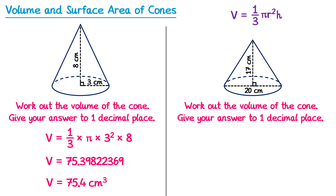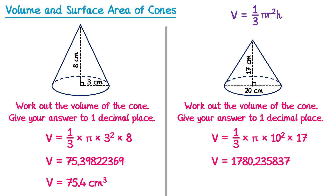For the second cone: volume = 1/3 × π × r squared. The diameter is given as 20, so the radius is half of that — 10. So we multiply by 10 squared, then by h, which is 17. Typing this into the calculator and rounding to 1 decimal place gives 1780.2 centimetres cubed.